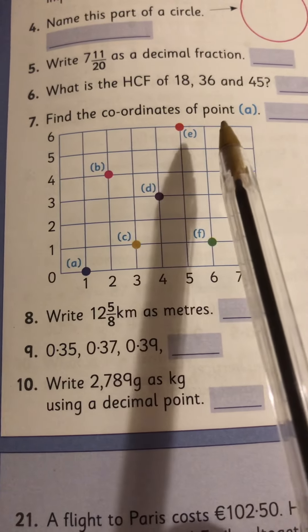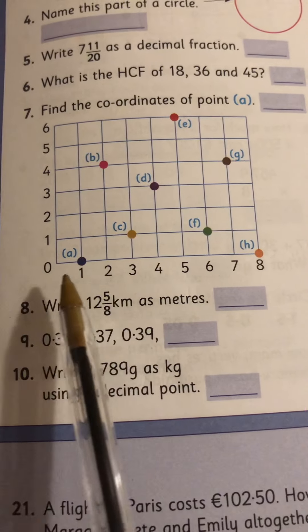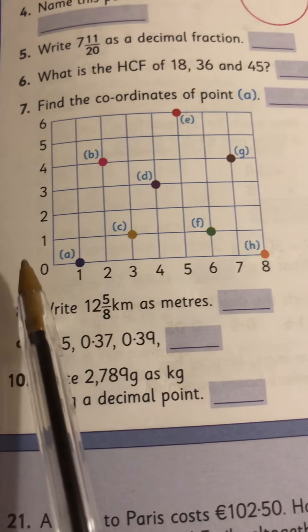Number 7, find the coordinates of point A. So you go across the bottom first, then up the side.